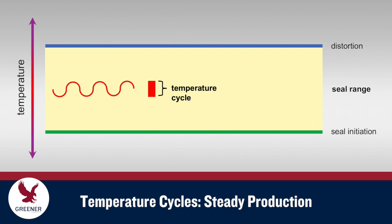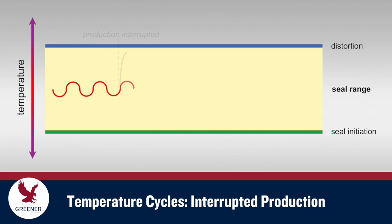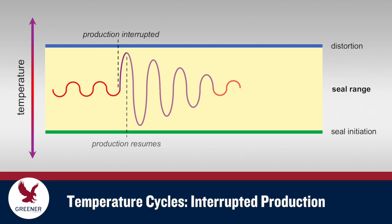These fluctuations generally cycle within a few degrees on most machines, but when production is interrupted the sealing jaws are no longer transferring heat to the packaging material and jaw temperatures spike. When production resumes, temperatures drop significantly and then, after a few moments, recover and return to normal.